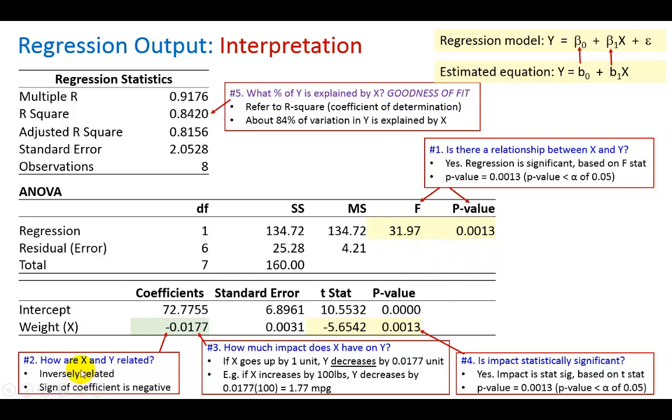Number two how are X and Y related? Well look at the sign of this coefficient. This is the coefficient of X which is the estimator for the slope coefficient. We can see it's negative so we conclude that they are inversely related.